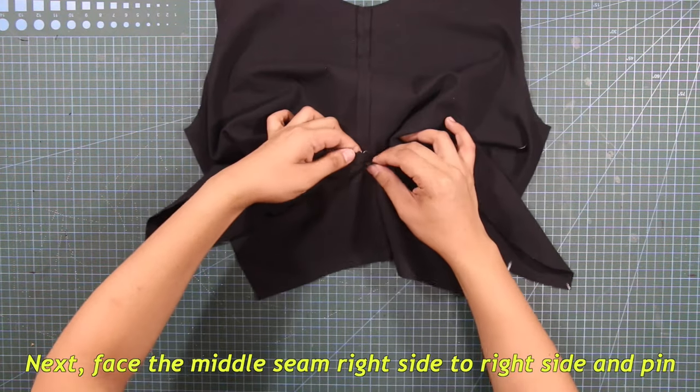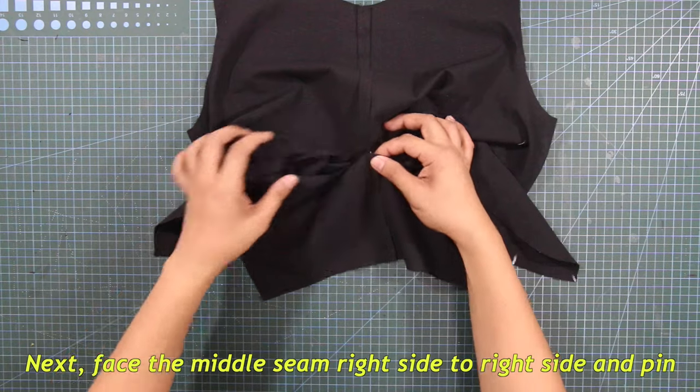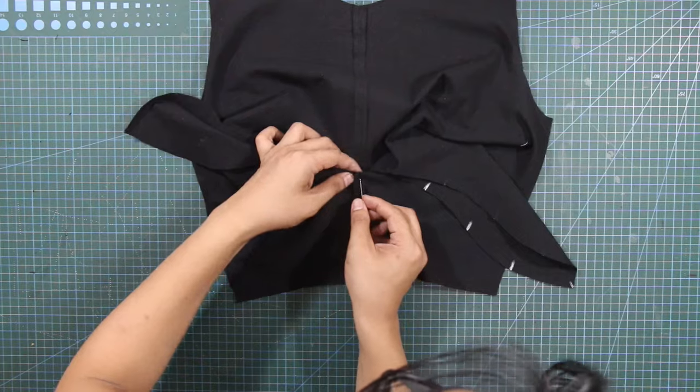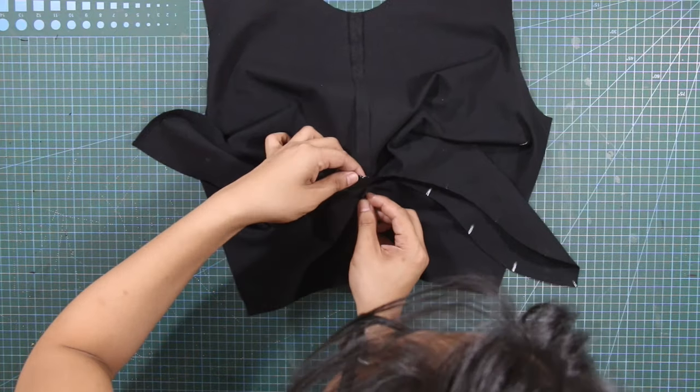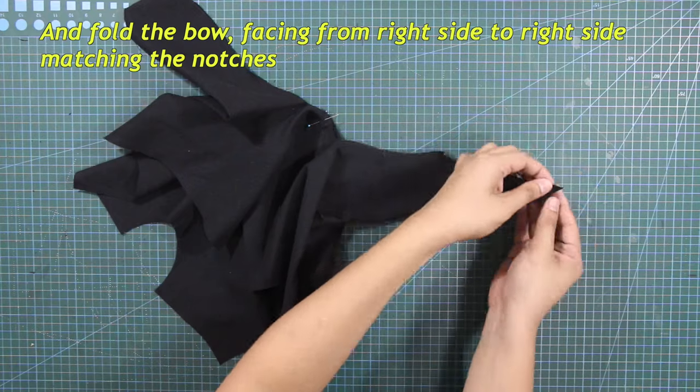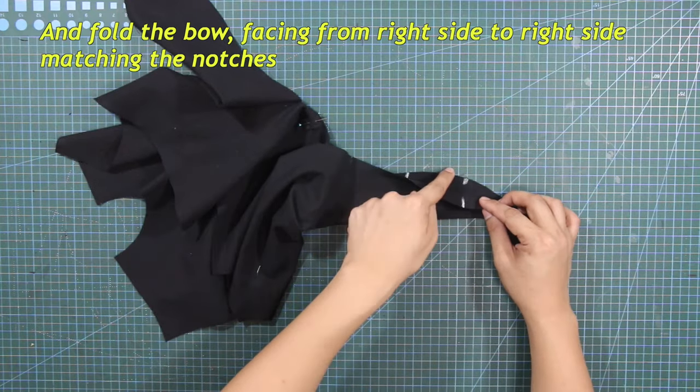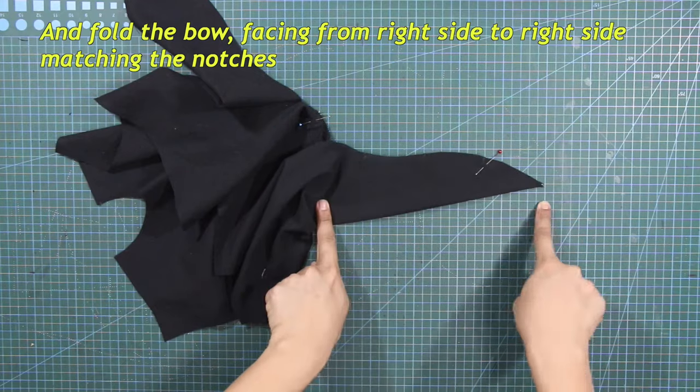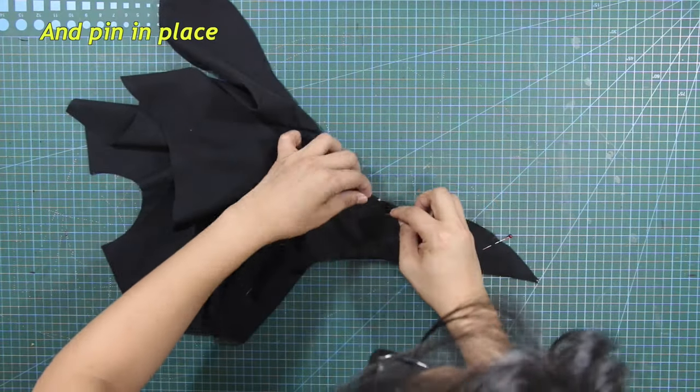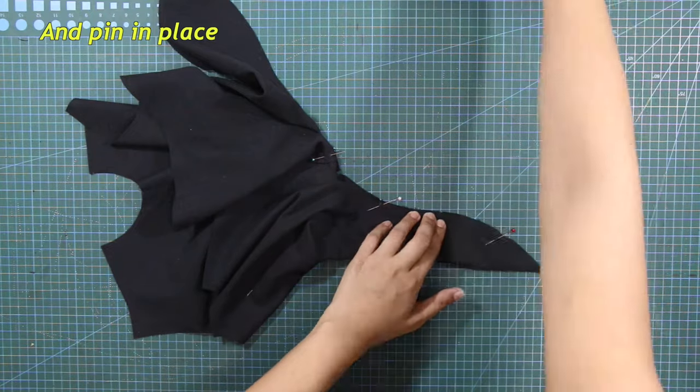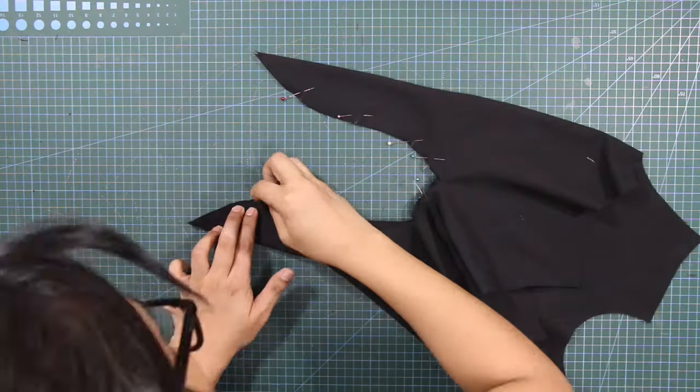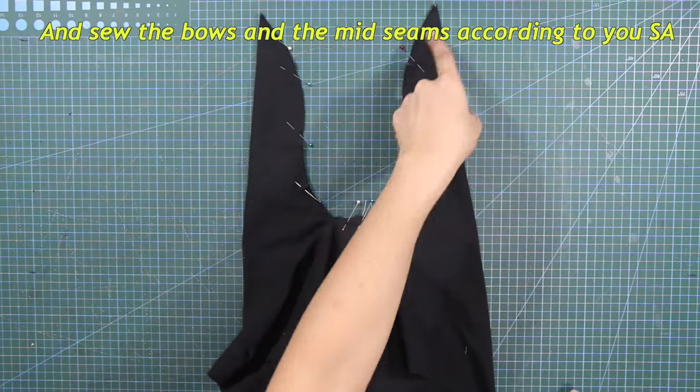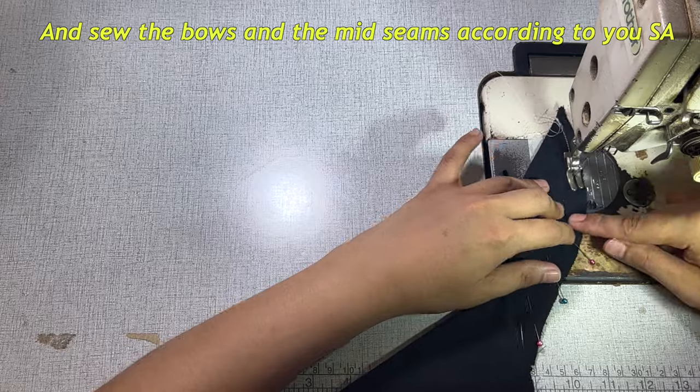Next, face the middle seam right side to right side and pin. And fold the bow facing from right side to right side matching the notches and pin in place. And sew the bows and the mid seams according to your sewing allowance.